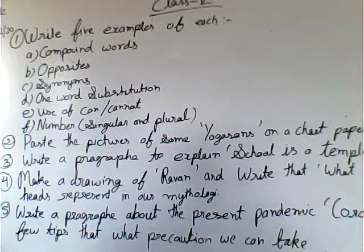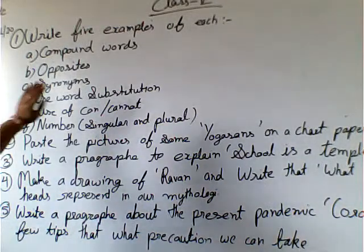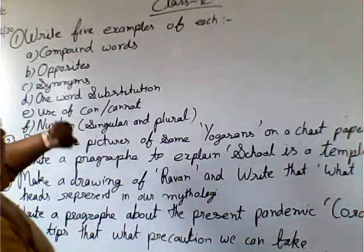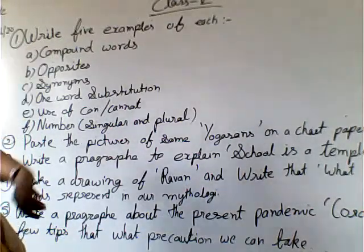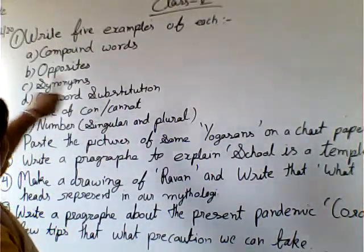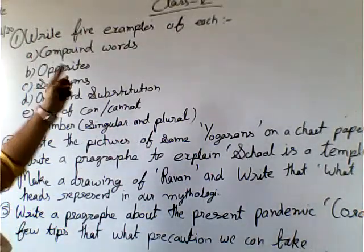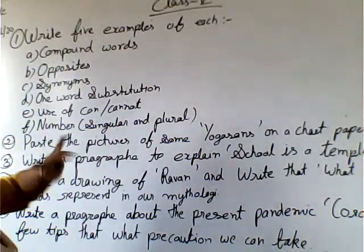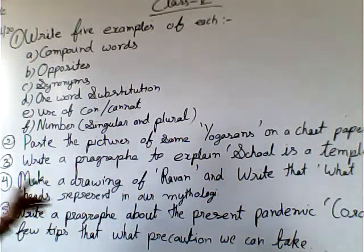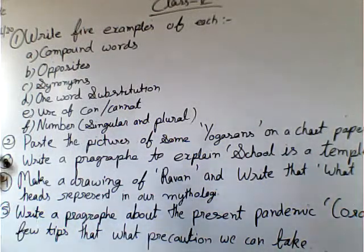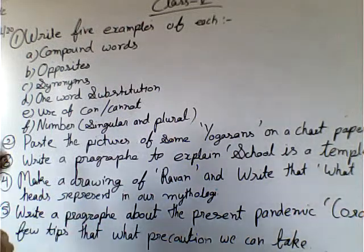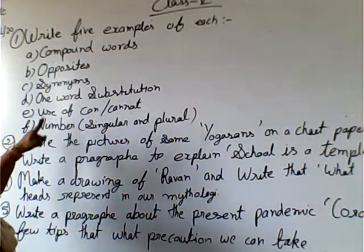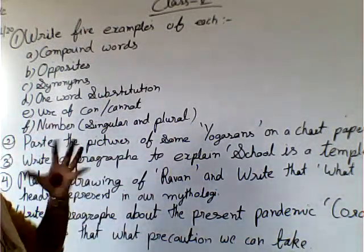Now look here. The first task is to write 5 examples of each of the following: compound words, opposites, synonyms, one word substitution, and use of can and cannot.